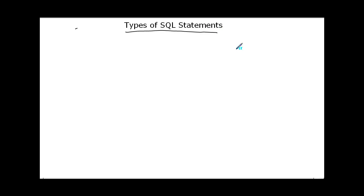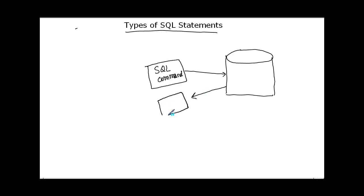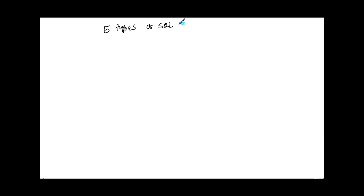In this video we are going to discuss different types of SQL statements. We have an Oracle database, and we give SQL commands from a command line tool like SQL*Plus or iSQL, or through programs like Java, PHP, or C. We send an SQL command to the database, the database parses it, does what it's supposed to do, and sends back the result. There are five types of SQL statements available.